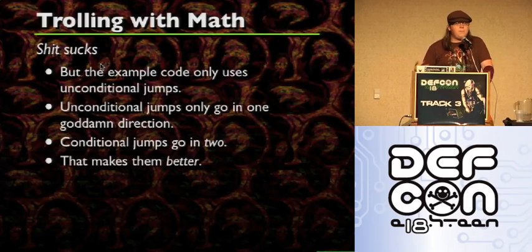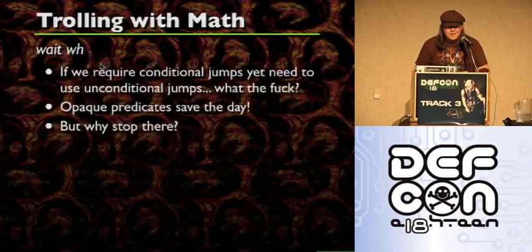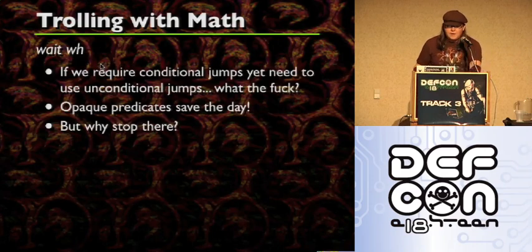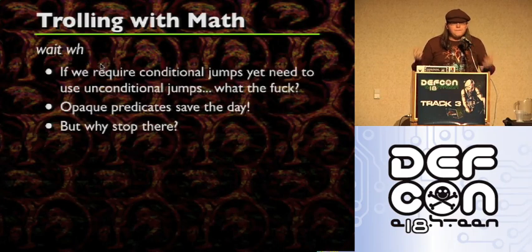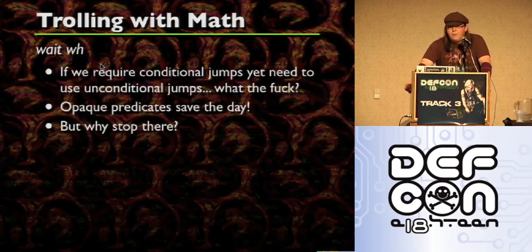So how do you deal with this? Well, the inverse of an unconditional jump is a conditional jump which goes in two directions, which makes it more awesome — in fact, you could say it's 50% more awesome. But that provides a very interesting dichotomy because if we need conditional jumps but we also need unconditional jumps, what do we do? That's what opaque predicates are for. An opaque predicate is essentially a Boolean statement that always evaluates to a specific value no matter what.